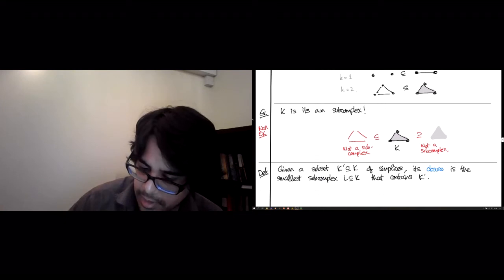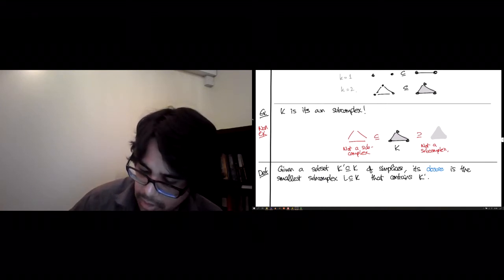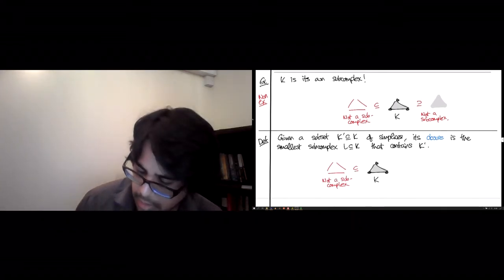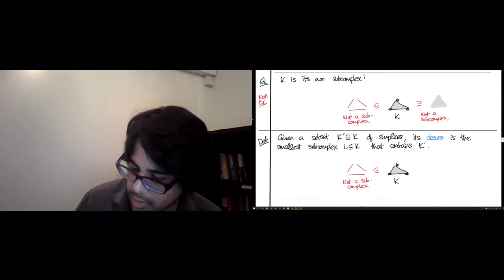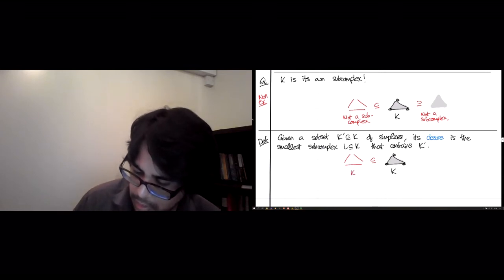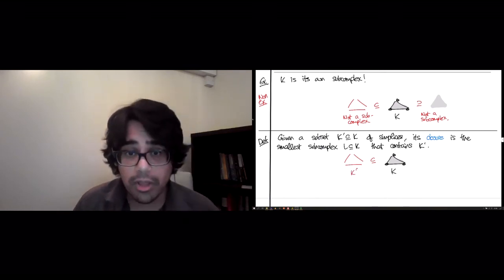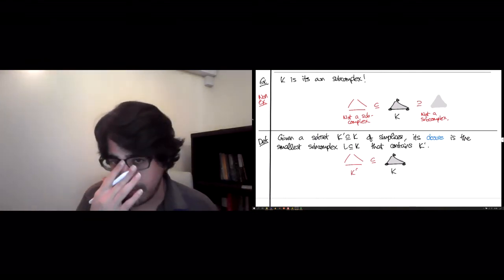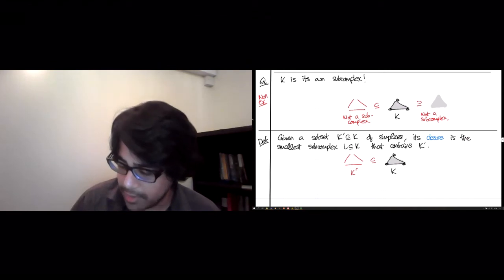So in this bad example that we just saw of the three edges, which is not a subcomplex. The way you'd make it a subcomplex, so this would be our K prime. The smallest simplicial subcomplex that you can get of K that contains K prime, well look, it has to at least have these three edges.